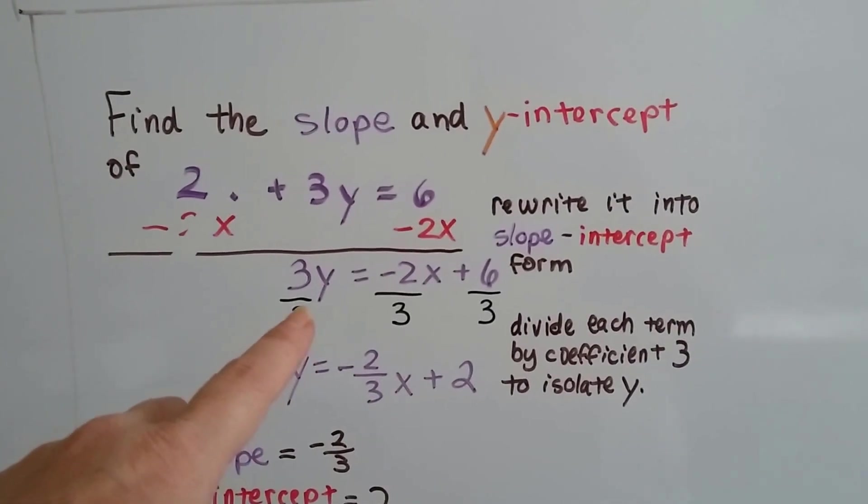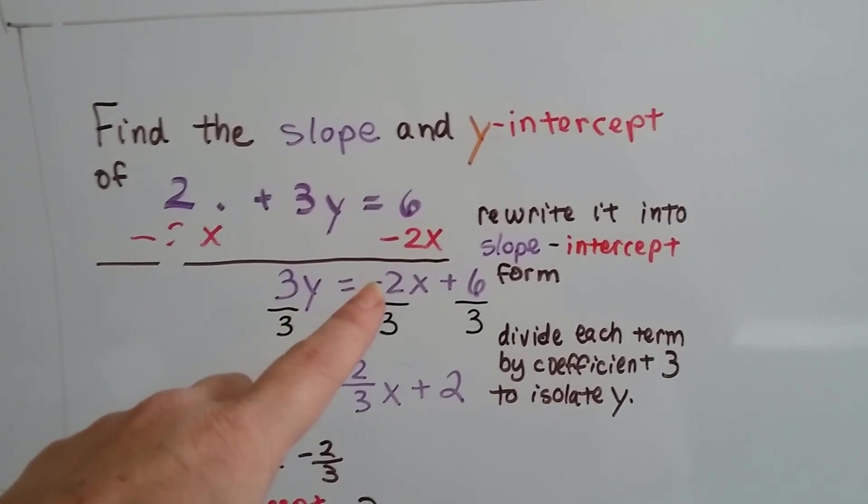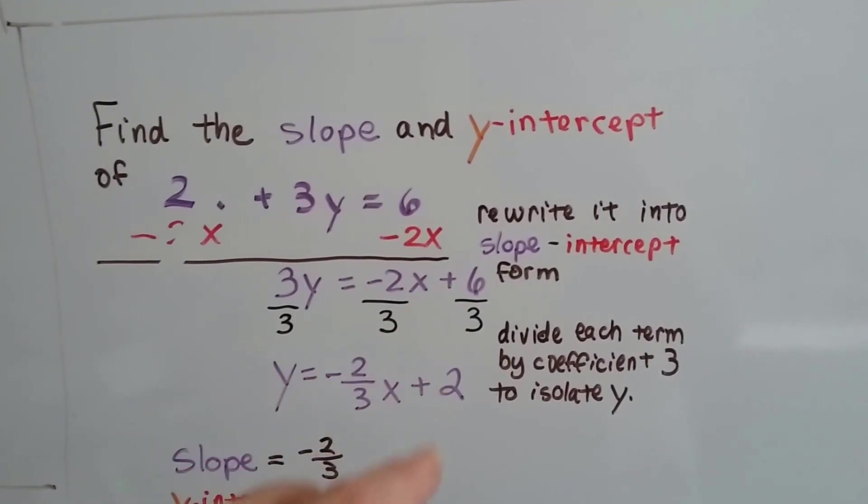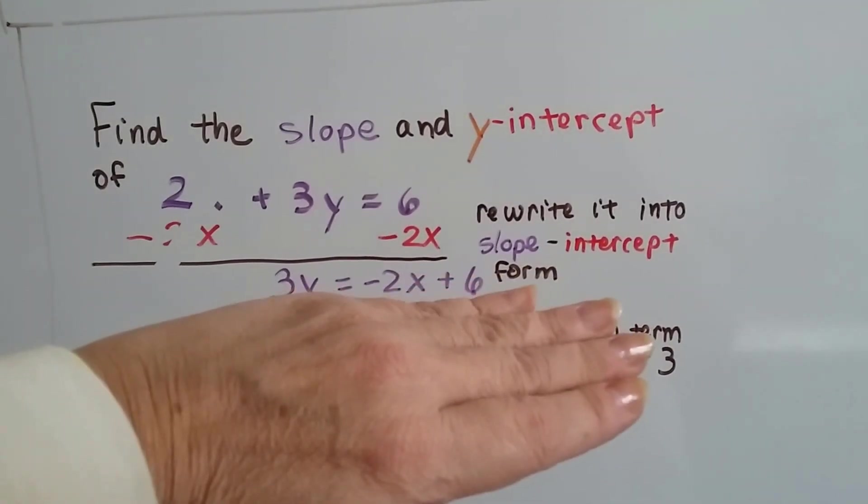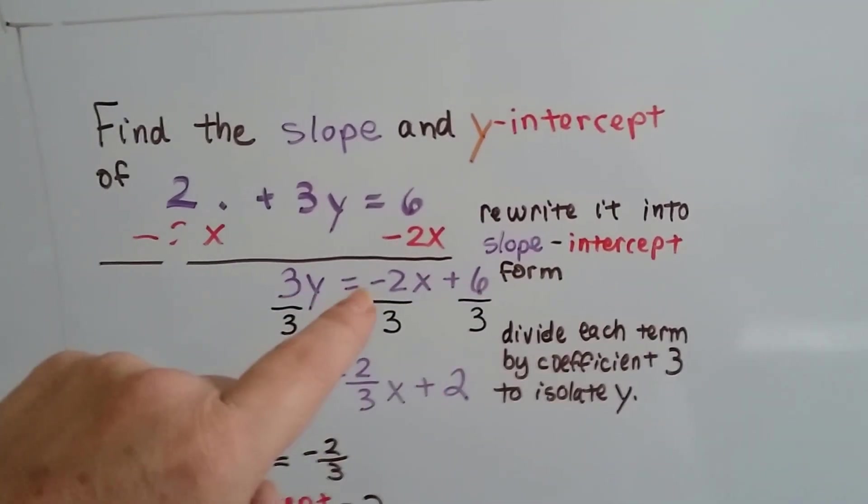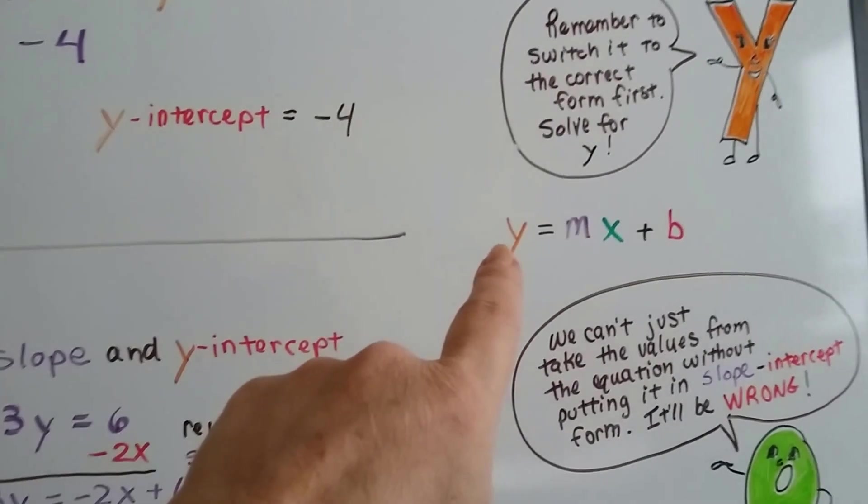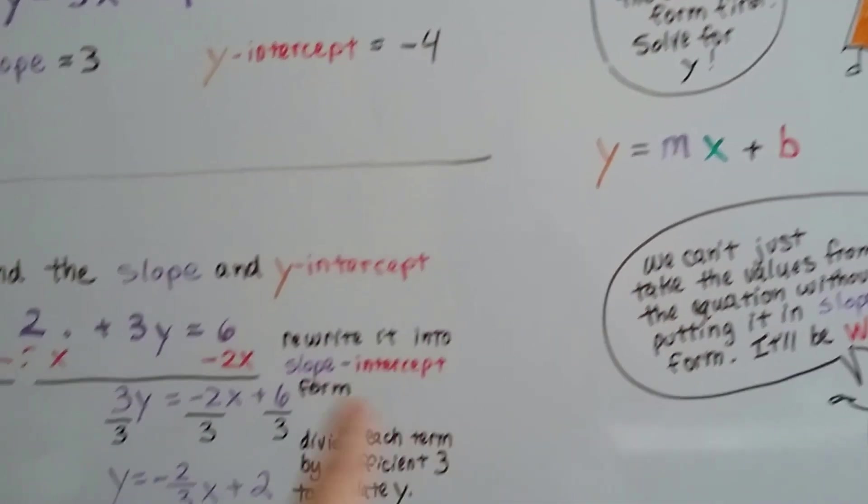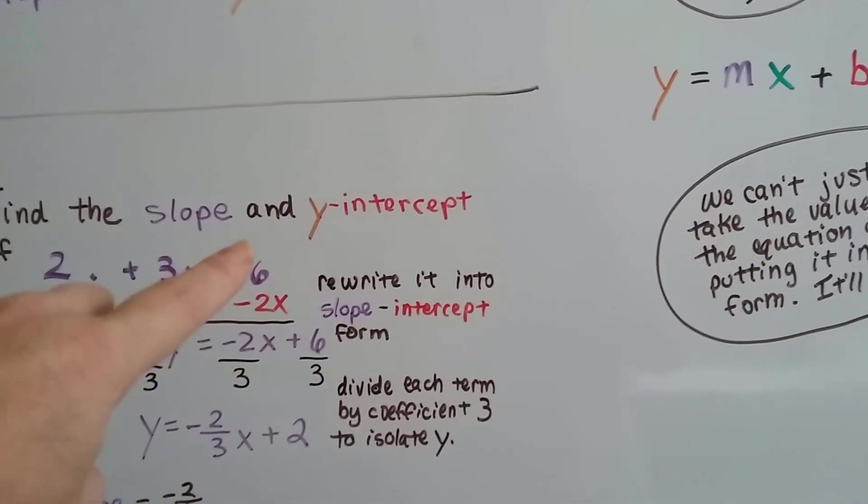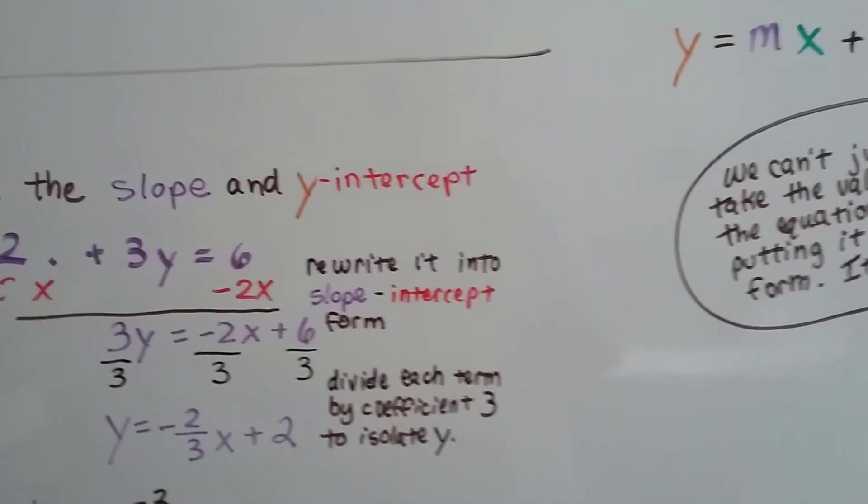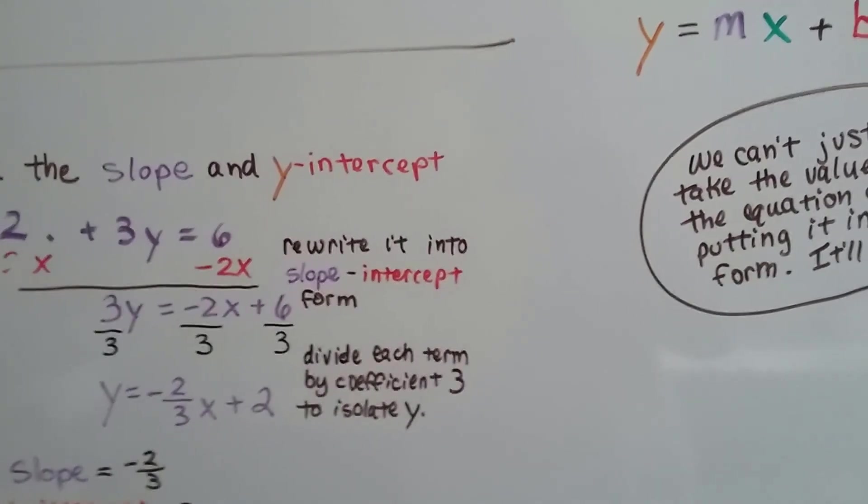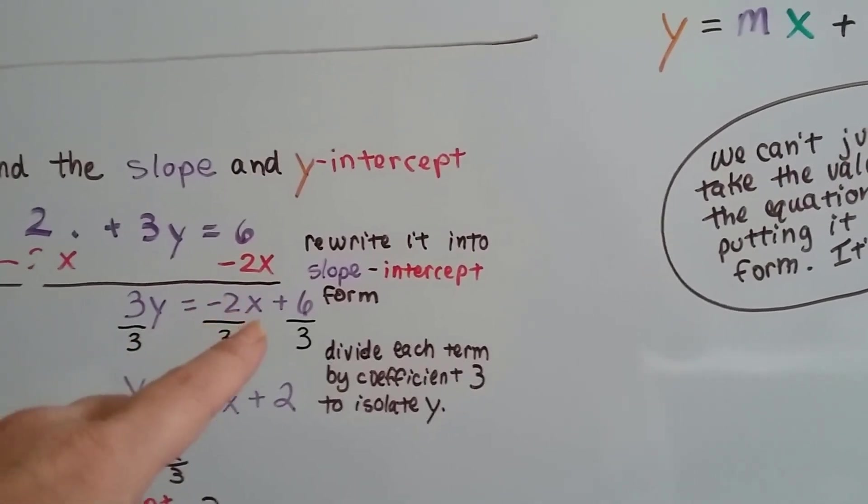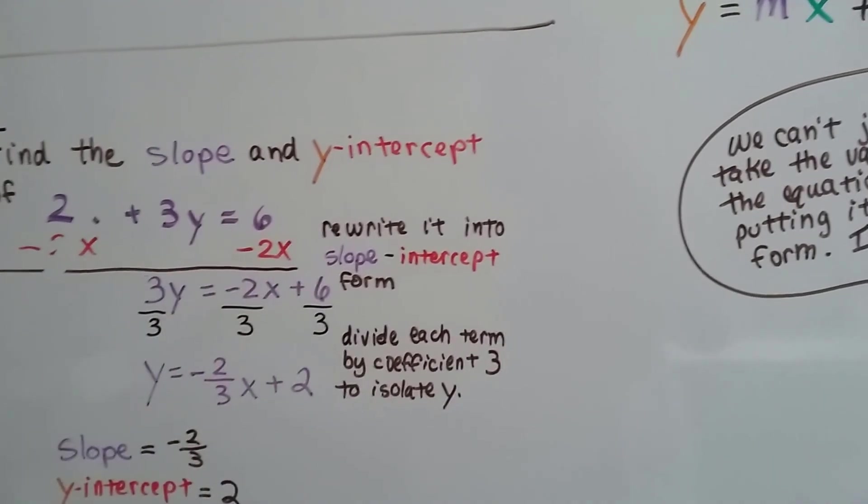Now we've just got 3y equals negative 2x plus 6. And you have to remember that it has to be in this form. So the x and the slope have to be up in front of the plus b. We can't put 6 minus 2x. That's not slope-intercept form. It has to be negative 2x plus 6, because that's a positive 6.